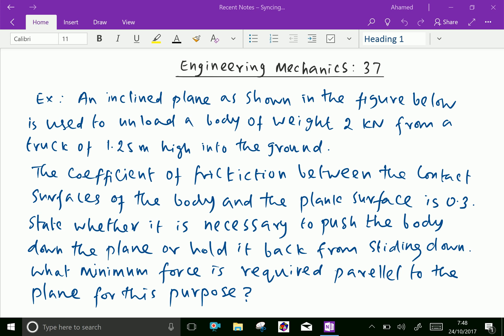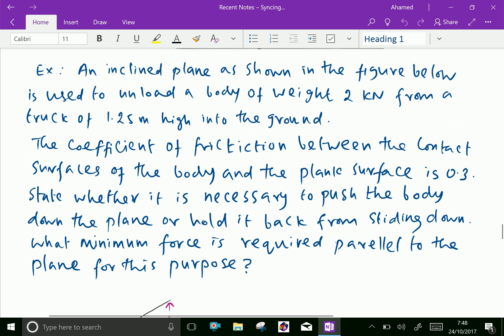An inclined plane as shown in the figure below is used to unload a body of weight 2 kilonewton from a truck of 1.25 meter high into the ground.